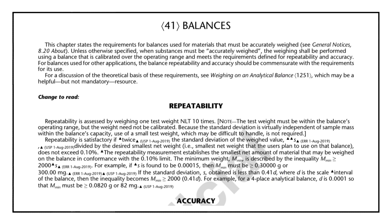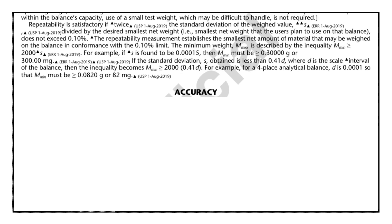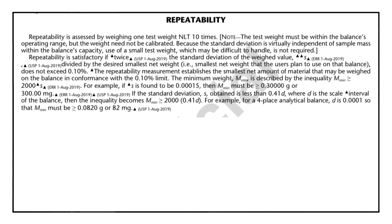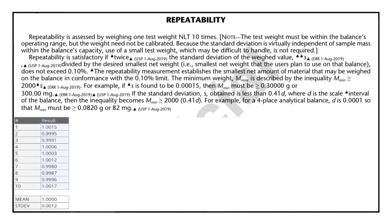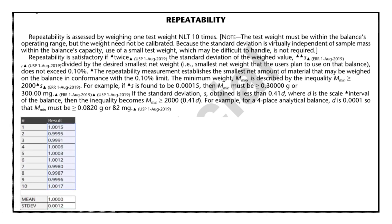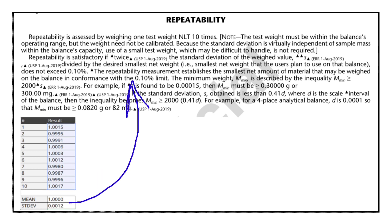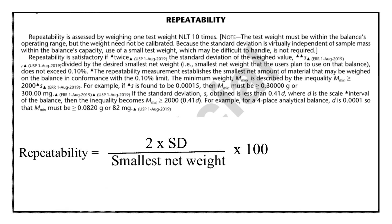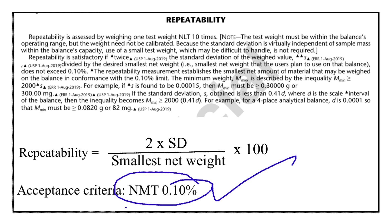Now let us see how these test parameters are performed. To perform the repeatability test, a single test weight is selected and it is weighed again and again for 10 times. The standard deviation is calculated for these 10 weights, and the obtained standard deviation value is entered in this formula to get the repeatability result. The formula is: 2 × standard deviation ÷ smallest net weight × 100. The obtained value should not be more than 0.10 percent.